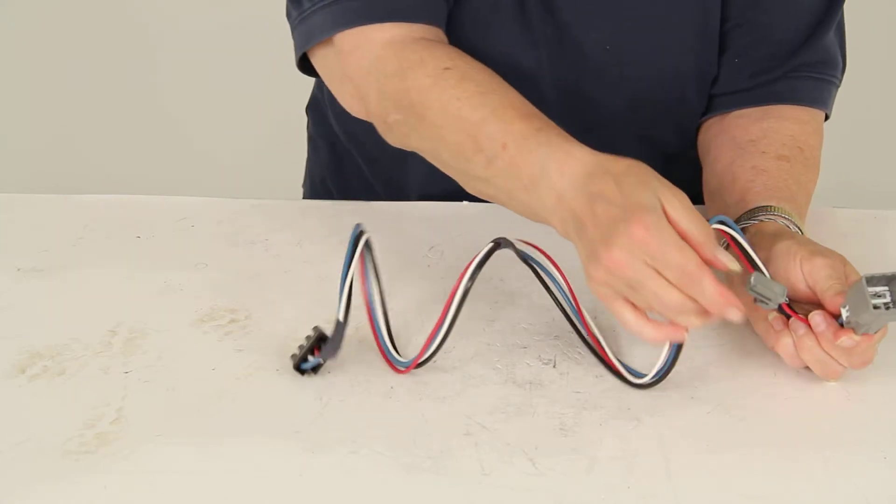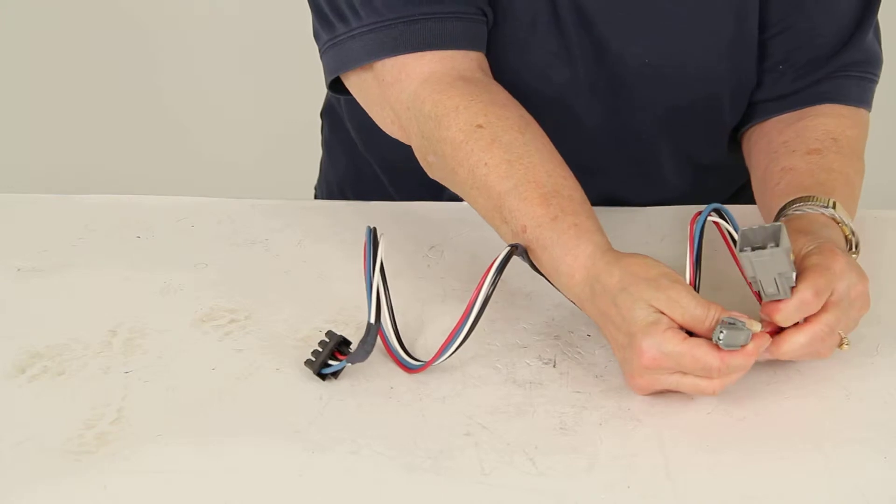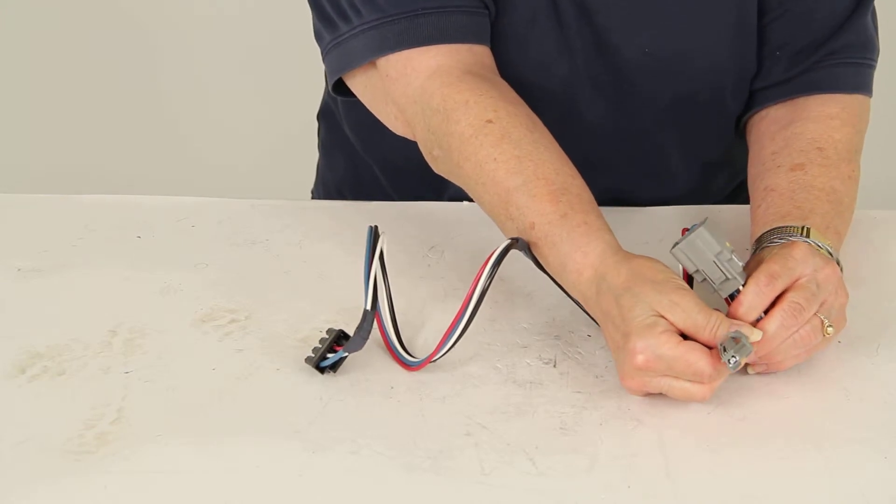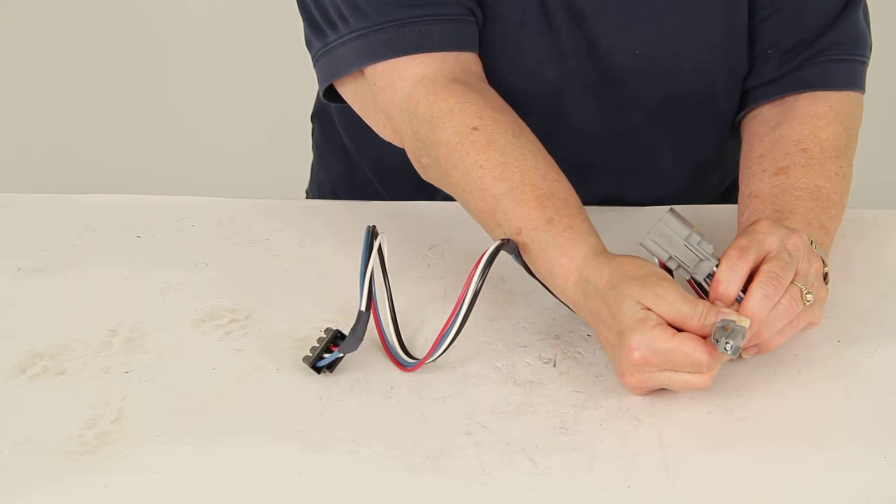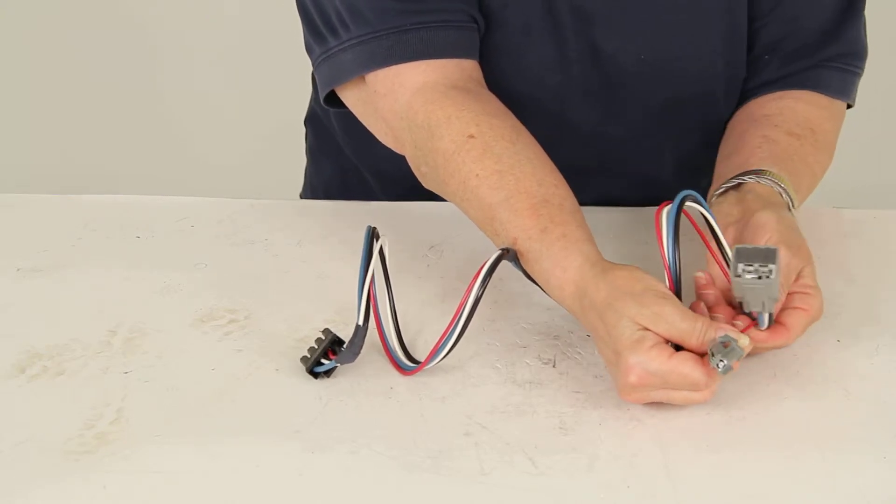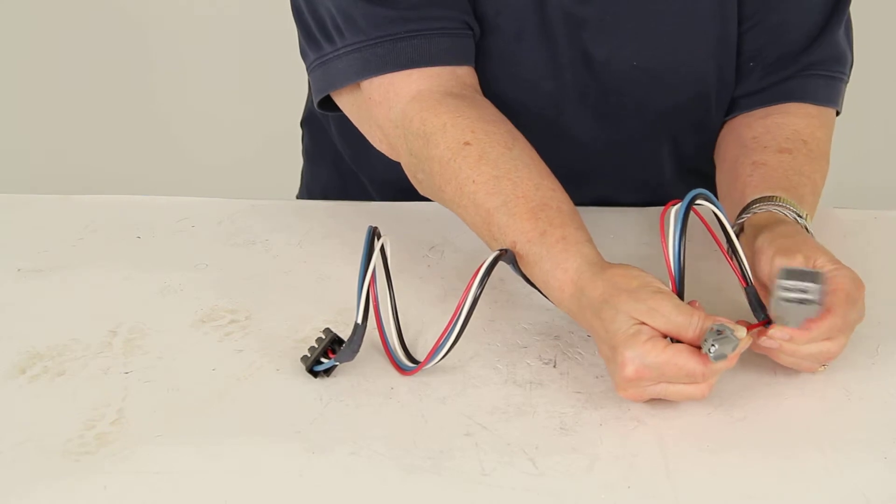And then the smaller gray plug with the red wire gets connected to the 2-pin plug, which is found under the dashboard just above the brake pedal. So it's in a different location. These are tied together right now, but the red wire is separate.